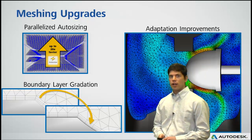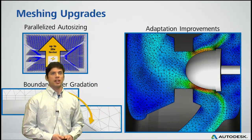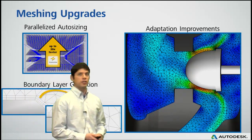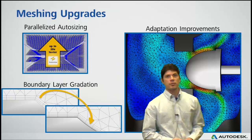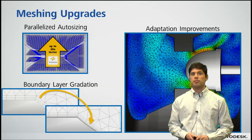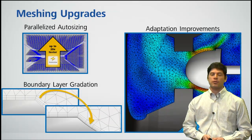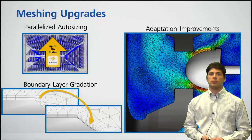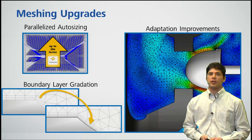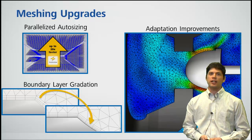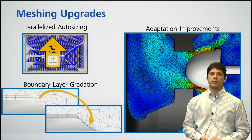To go along with the solver improvements, the team also made an investment in the meshing area. The first area was we parallelized the auto-sizing algorithm, which has shown to increase auto-sizing speed by a factor of up to 20x on some large models. To go along with the turbulence models, we're also giving users the ability to more closely control the mesh in the boundary layer in an area we call mesh enhancement, so users can now employ mesh enhancement gradation to effectively capture all the physics in that really critical portion of the flow.